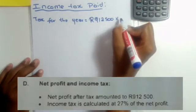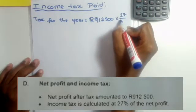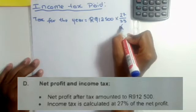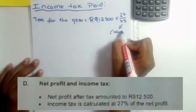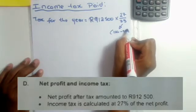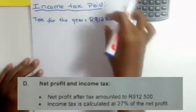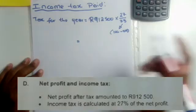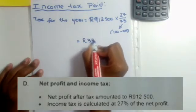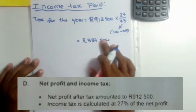To get the tax amount itself, we are going to multiply by twenty-seven over seventy-three. Where do I get this seventy-three? I simply said a hundred — which is the full percentage — and I subtracted the twenty-seven, so I'm left with seventy-three. So the tax for the year, when you punch this in your calculator, will tell you that the amount of tax for the year is three hundred and thirty-seven thousand five hundred.